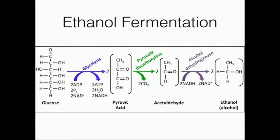In glycolysis, glucose gets converted to pyruvate, or pyruvic acid. In the process, we take two NADs and get two NADHs. If your electron transport chain is not functioning because there's no oxygen available, then you can't get that NAD back. So you need a way to generate NAD — in other words, you need a way to waste this NADH.